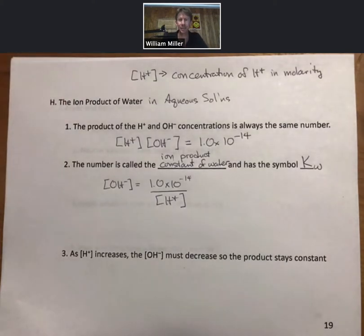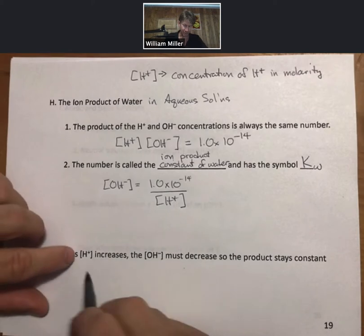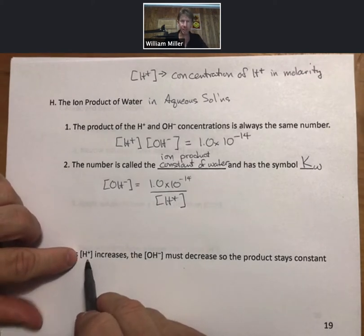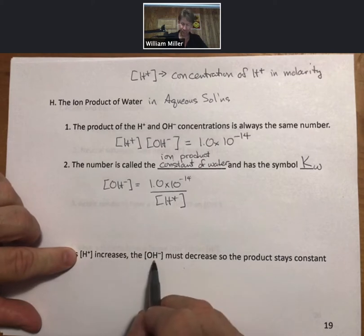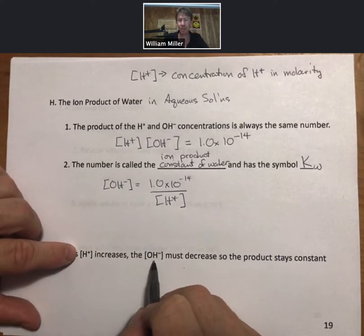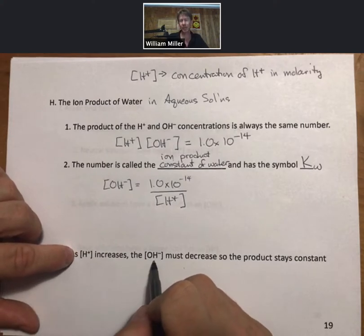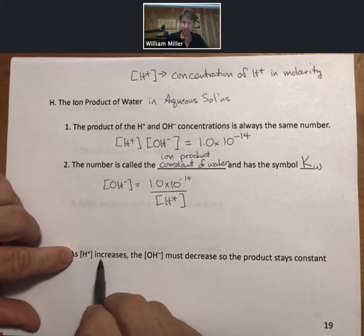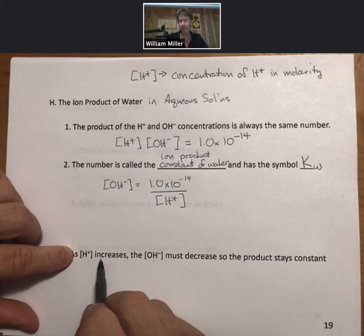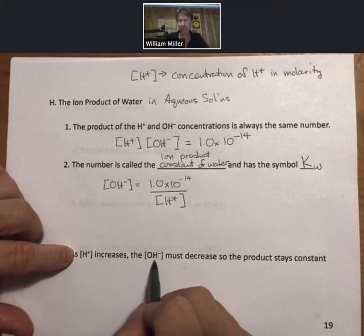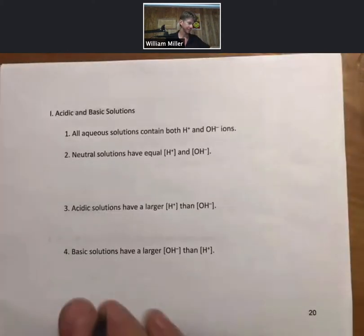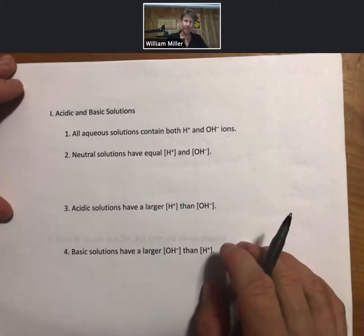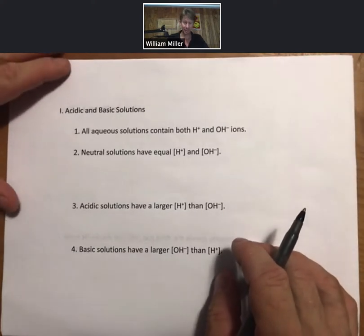One interpretation of that is, as we'll see, since H plus is our ambassador for what we think of when we think of acids, strong acids in particular, but all acids, and hydroxide is what we think of when we think of bases, the more acidic something is, another way of looking at it is the less basic it is when it's more acidic.